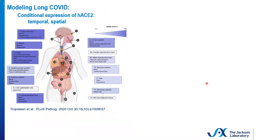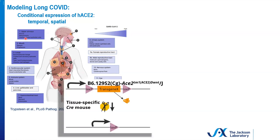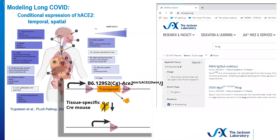Another non-mutually exclusive strategy to attempt to model long COVID could be to limit the course of infection — either temporally or site-specifically. Here's a map of the SARS-CoV-2 viral load, with darker purple indicating a higher viral load. One could cross the ACE2 floxed mouse mentioned earlier with a tissue-specific Cre mouse. That Cre mouse will act as molecular scissors to remove the transgene, turning on or off expression at will, and hence controlling susceptibility to infection. JAX has a variety of Cre lines that are site-specific and/or inducible. You can go to our search engine at mice.jax.org and search for, for example, lung Cre lines, or any other tissue site that you might be interested in creating a conditional knockout mouse for.